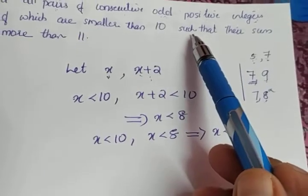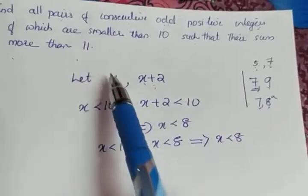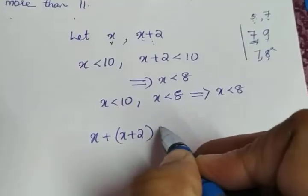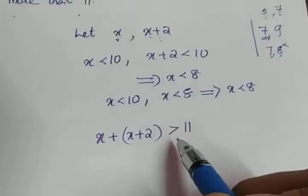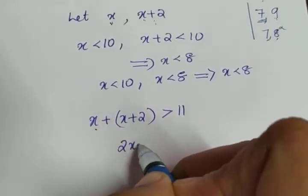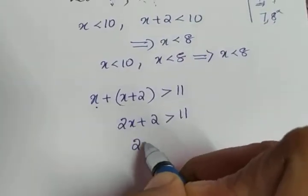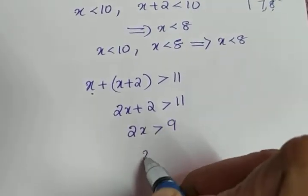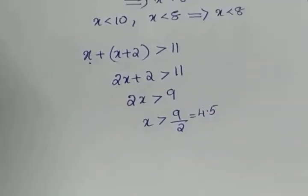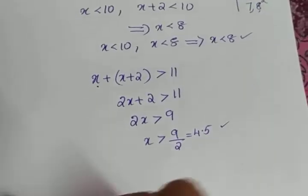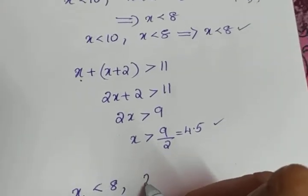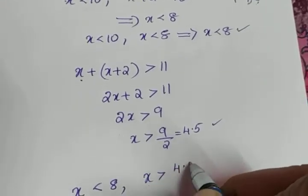One more condition: their sum is more than 11 — the sum of the two integers. So X plus (X plus 2) is greater than 11. More than 11 means greater than 11. So 2X plus 2 greater than 11, which gives 2X greater than 9, meaning X greater than 9 divided by 2, which is 4.5. So the two inequalities are X less than 8 and X greater than 4.5.